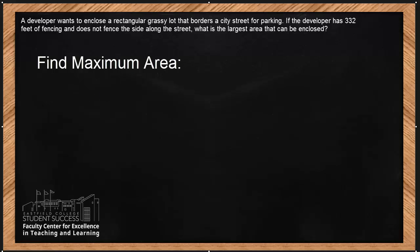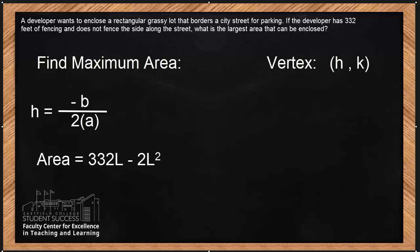To find maximum area, we need to find the vertex. We need to find that h, k. To find the h, we have to go back to the function and find the b and the a. Remember, h is negative b over 2a. b is 332. a is negative 2. So we have negative 332 that we're going to divide by negative 4. Negative divided by negative is positive. 332 divided by 4, 83.